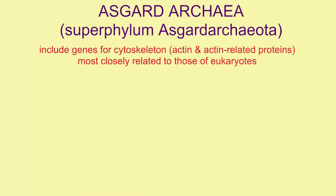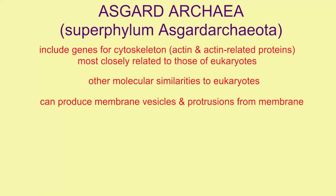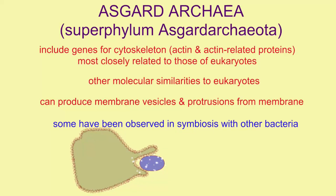Since 2010, it has become known that there are archaea known as the Asgard archaea, a new superphylum, which are very similar to eukaryotes. They include genes for the cytoskeleton, actin genes, and actin-related protein genes, most closely related to eukaryotes. They can produce membrane vesicles and protrusions from the membrane, and some have been observed to be in a symbiotic relationship with other types of bacteria, so that these protrusions can help in the exchange of materials.